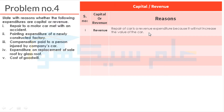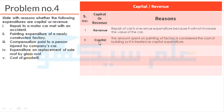The next is Painting. Painting is a capital expenditure. The amount spent on painting of the factory is considered the cost of the building. So it is treated as capital expenditure because it is a new building that is being constructed — the painting is part of the cost of the building.